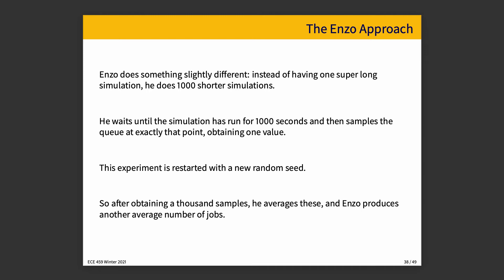Enzo does something different. Instead of having one very long simulation, he does a thousand shorter simulations. He waits until the simulation has run for 1,000 seconds, then samples the queue at exactly T equals 1,000, obtaining one value. The experiment is restarted with a new random seed, giving different initial conditions on the next go-around. After obtaining 1,000 samples, he averages these, and Enzo produces an average for the number of jobs.